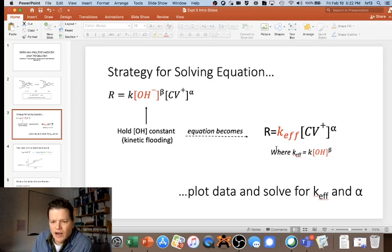When we plot our data—the absorbance data for crystal violet, how much light it's absorbing versus time—we can look at the functional form and figure out what alpha is, whether it's first order or second order. You'll also be able to determine what k_eff is depending on the fit that works, so we'll have a value for that.